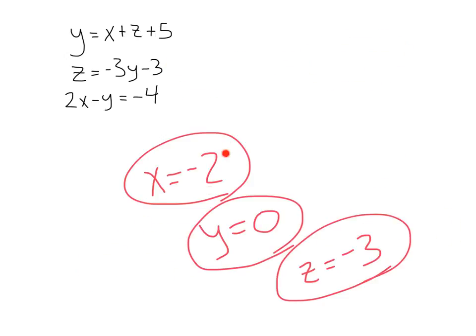And there you have it, folks, negative 2, 0, negative 3 for your x, y, and z. Stay tuned, we're going to get into some elimination real soon.